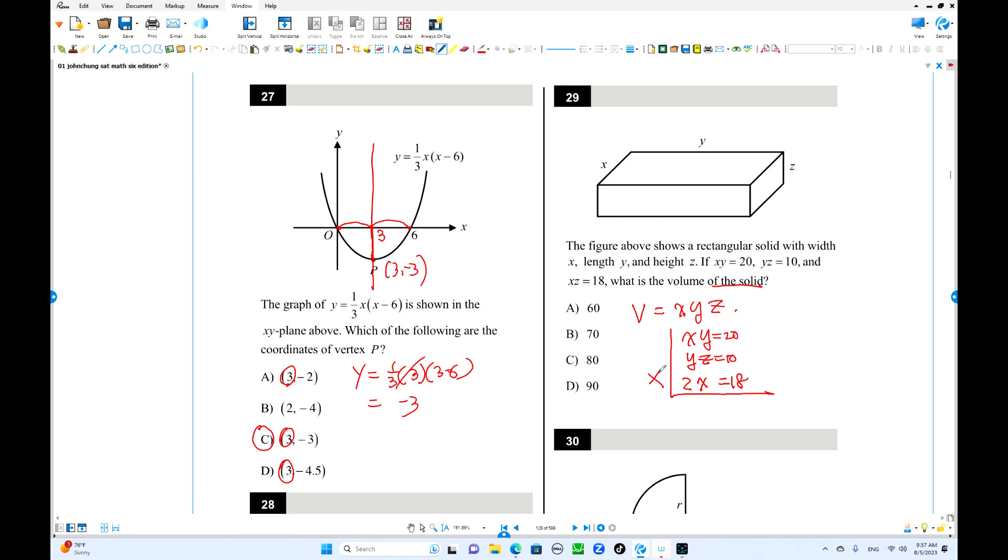When you multiply all of these, you get x squared, y squared, z squared. So x squared y squared z squared equals 3600. From here, you've got to make square root. x, y, z is the volume. That is 60.